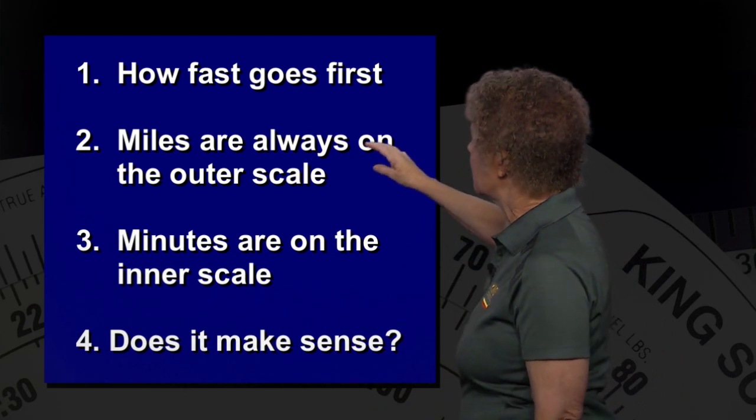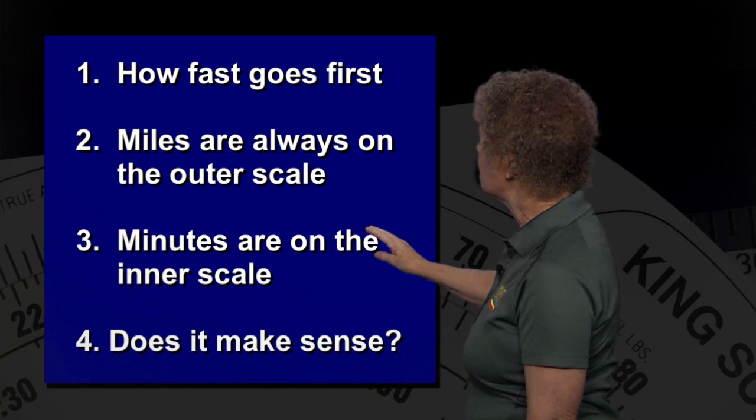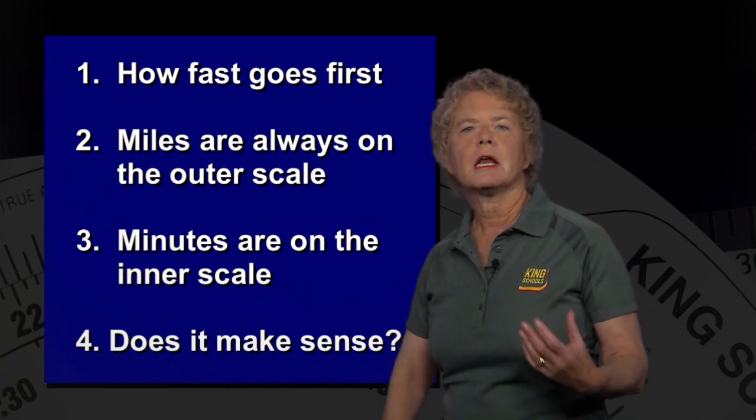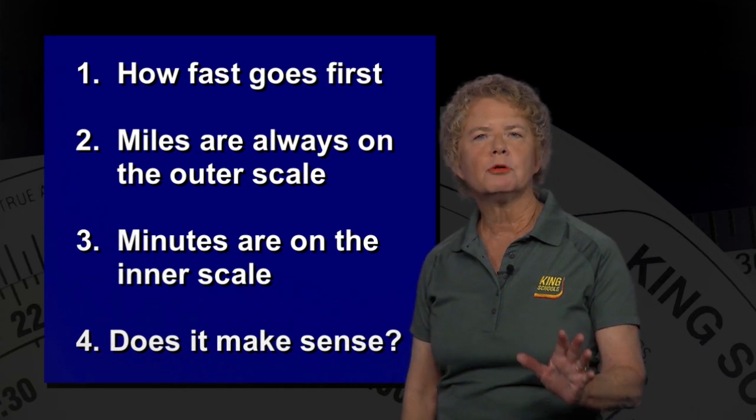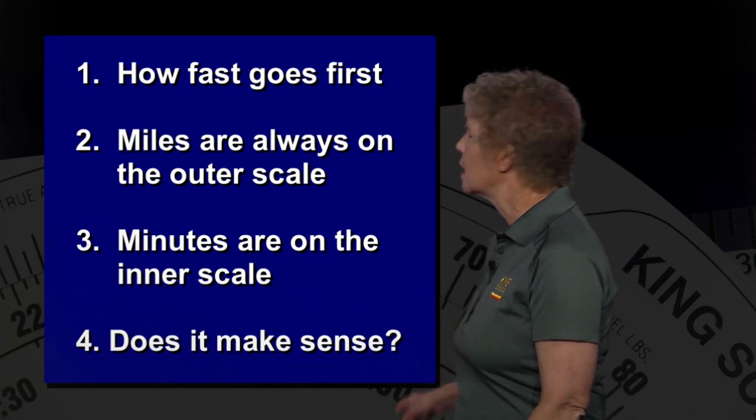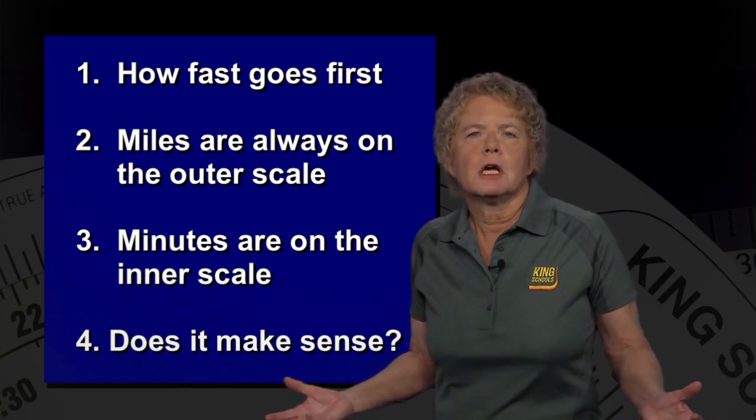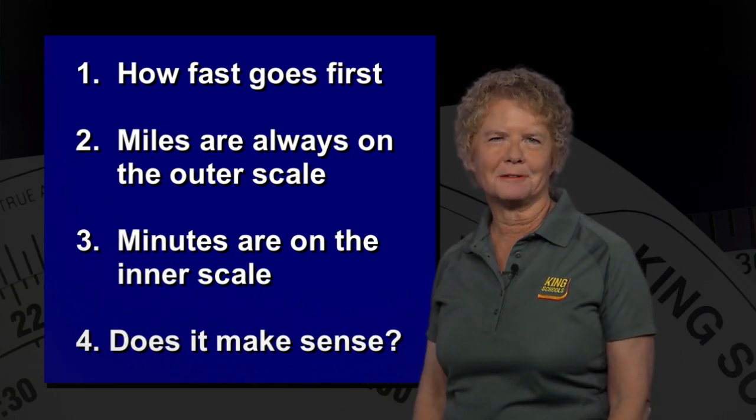Miles are always on the outer scale of the flight computer. Minutes are always on the inner scale, and hours are on the far inner scale. And the most important rule of all, number four, does it make sense? Does it make any sense when I get done calculating it out?